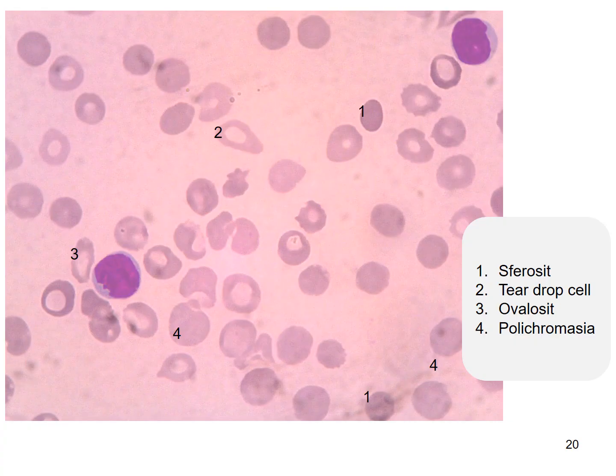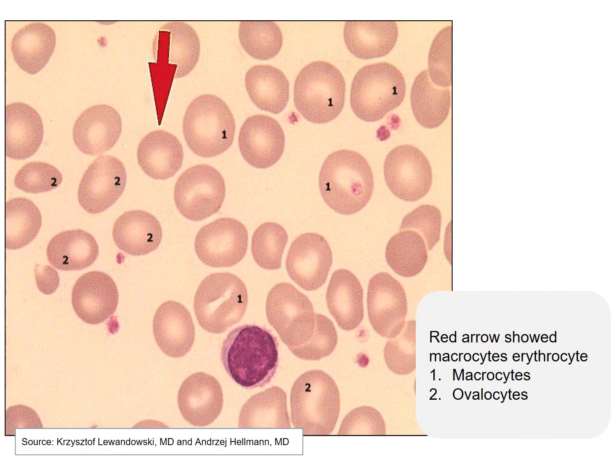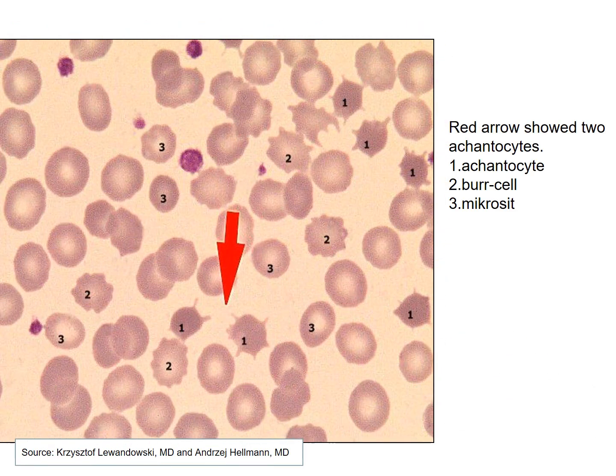Number one is a spherocyte, number two is a teardrop cell, number three is an ovalocyte, and number four is a polychromatic cell. This is a picture of ovalocytosis. In this next picture, we can see macrocytes and ovalocytes. Notice the acanthocytes, burr cells, and microcytes in this picture.